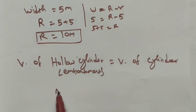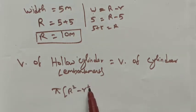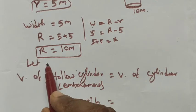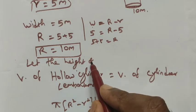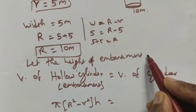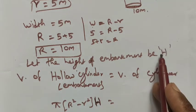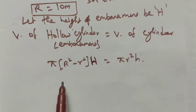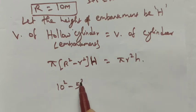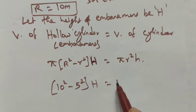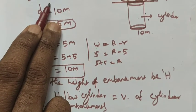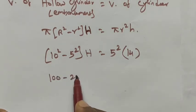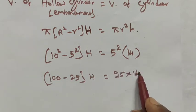The volume formula for a hollow cylinder is π(R² − r²)h. Let the height of the embankment be H. Setting the volumes equal: π(R² − r²)H = πr²h. Pi cancels on both sides. Substituting: (10² − 5²) × H = 5² × 14, which gives (100 − 25) × H = 25 × 14.